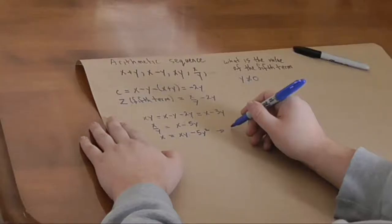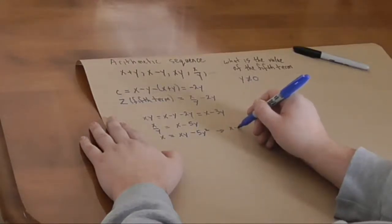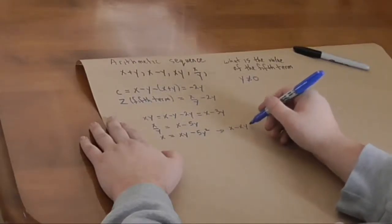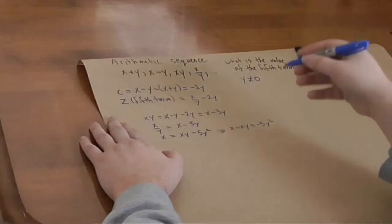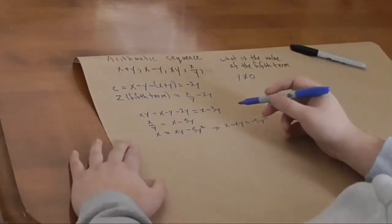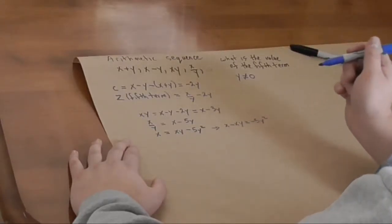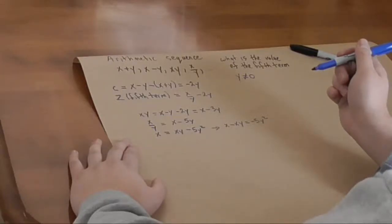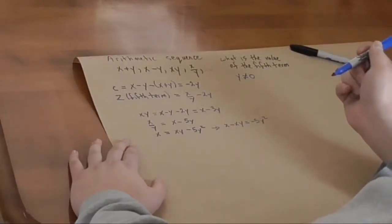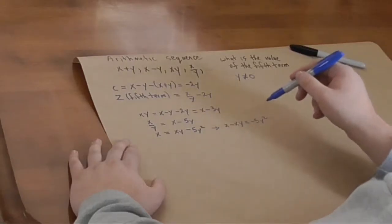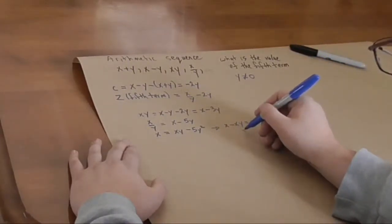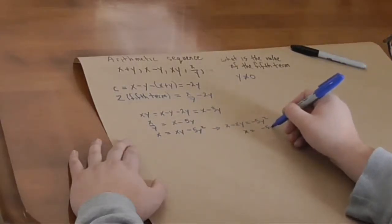So, that gives us x minus xy equals minus 5y squared, which gives us, this becomes x times 1 minus y. Now, you see, you've got to factor things the right way around.